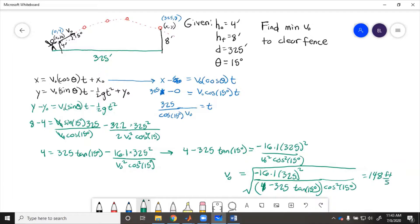That gives us 148 feet per second. So the required launch speed is 148 feet per second. Now if we want to put this into context, a normal decent major league fastball pitch is 100 miles per hour.